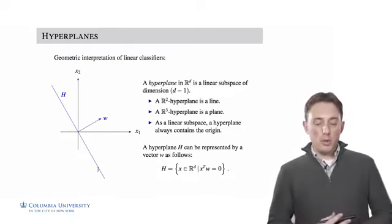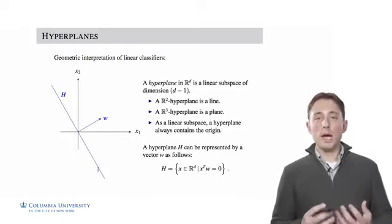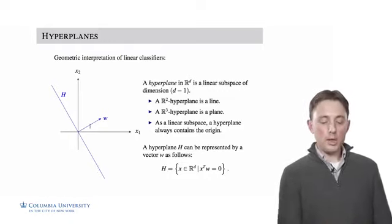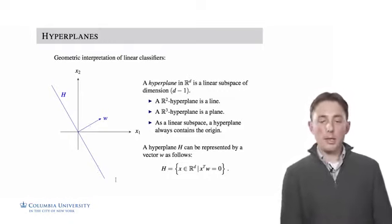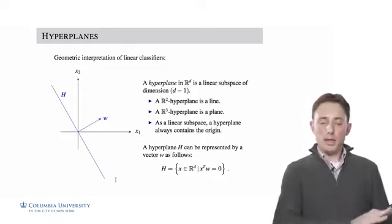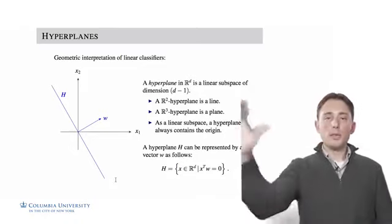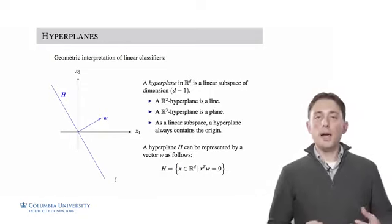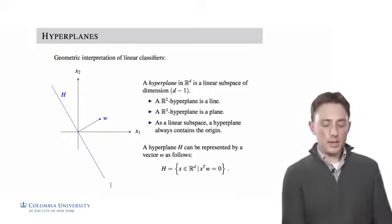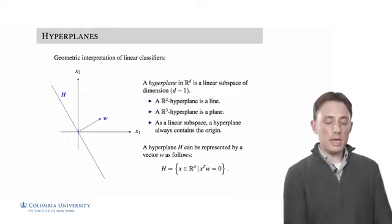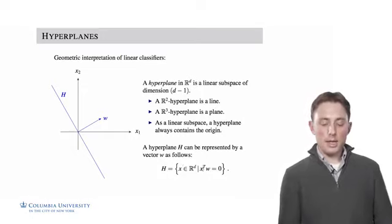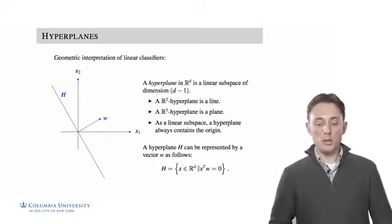Every vector w in Rd defines what can be called a hyperplane in Rd-1. For example, when w is in R2, the hyperplane is a line. When w is in R3, the hyperplane is like a piece of paper slicing through the space. We can define the hyperplane h associated with the vector w to be the set of all points x such that the dot product between x and w is equal to 0.